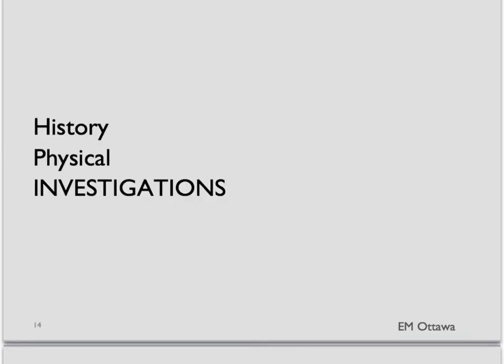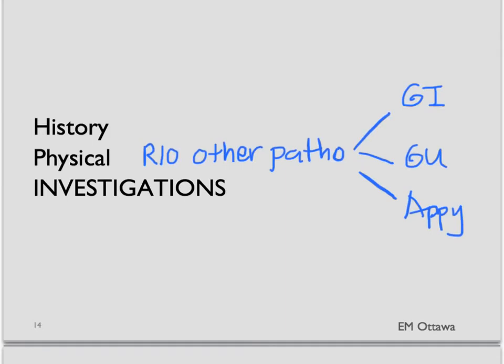To summarize, in history we are going to ask about risk factors and previous obstetric and gynecological history. In terms of physical exam, we want to do a physical and pelvic exam to rule out other pathology, such as GI causes for pain, GU causes including renal colic, pyelonephritis, UTI, or appendicitis.